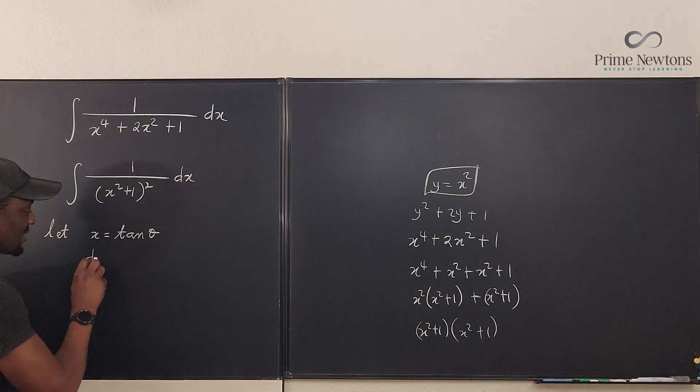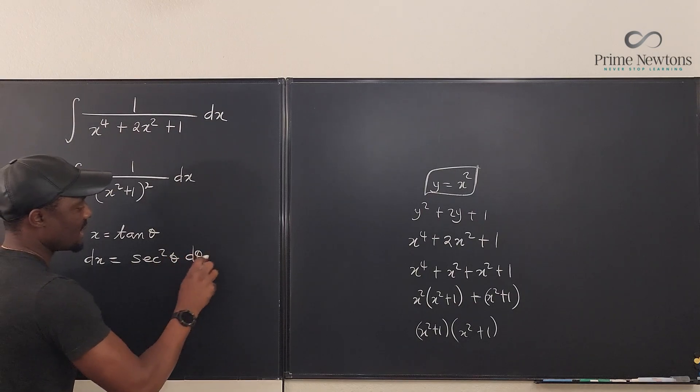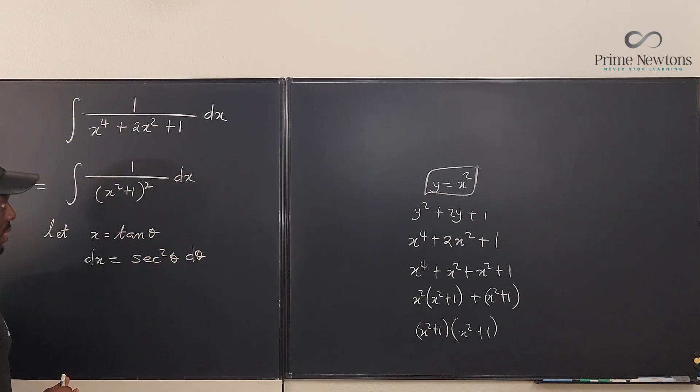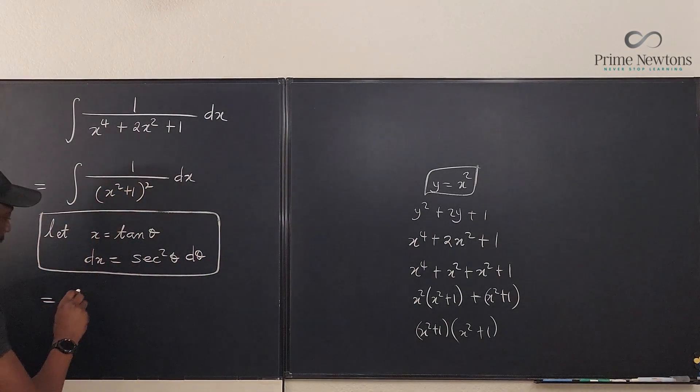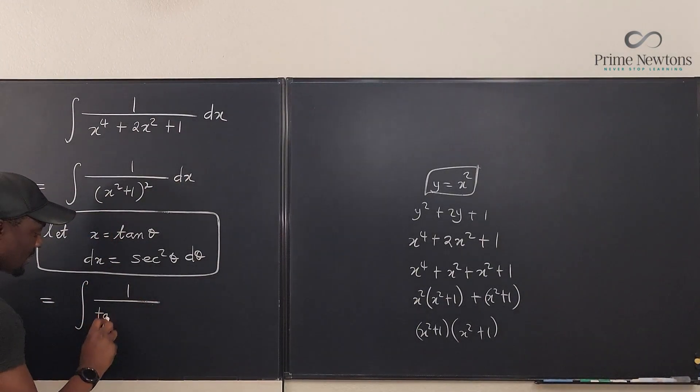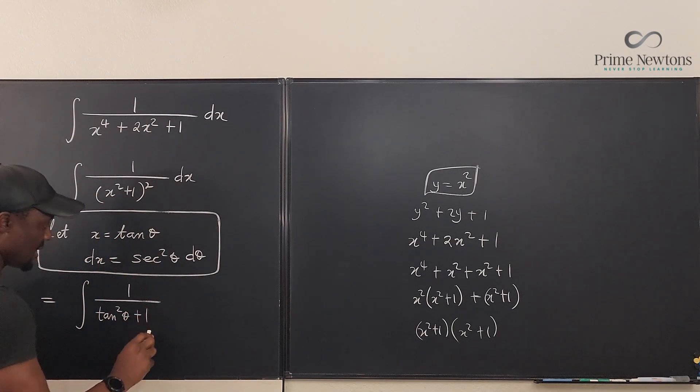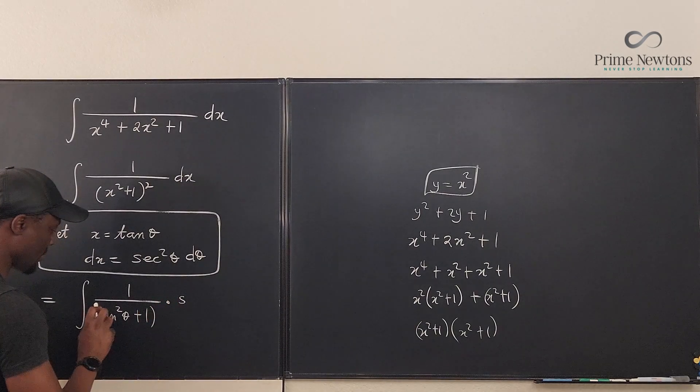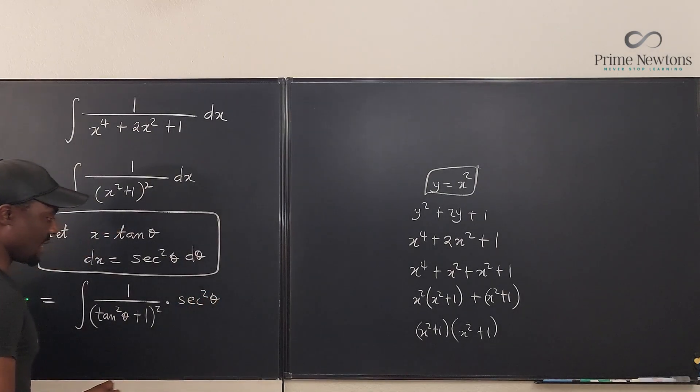So what is dx? Well, dx is going to be equal to sec^2 θ dθ. So I can replace dx with sec^2 θ dθ. So it means this integral can be written as the integral of 1 over (tan^2 θ + 1)^2 multiplied by sec^2 θ dθ.